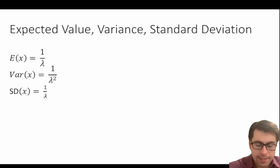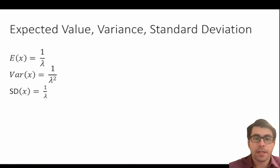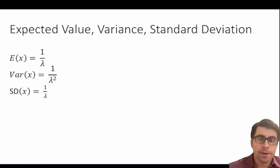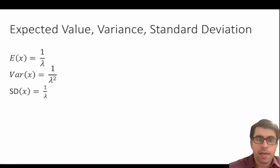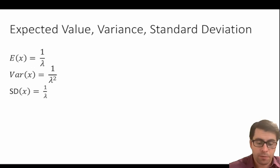We can also look at the expected value, variance, and standard deviation of exponential distributions. Our expected value is simply equal to one over lambda, which also gives us our rate parameter. Our variance is equal to one over lambda squared. And our standard deviation gives us the same thing as our expected value — one over lambda.